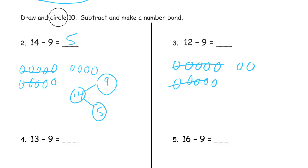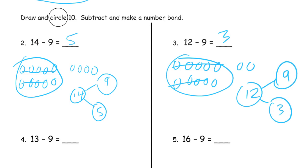Cross out 9 from this group of 10 here. Alright, well, we're supposed to circle the 10. We're going to do that there. And then we have 3 left. Our number bond is a whole of 12 with parts of 9 and 3.